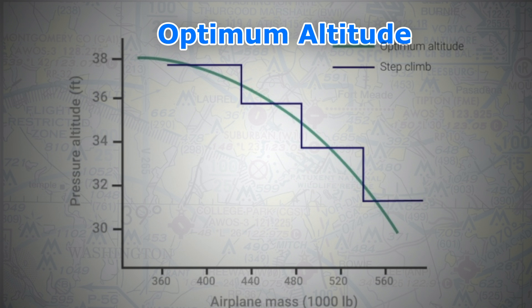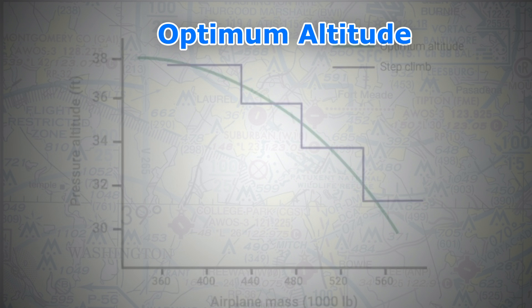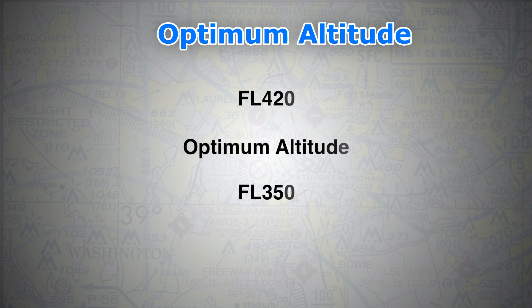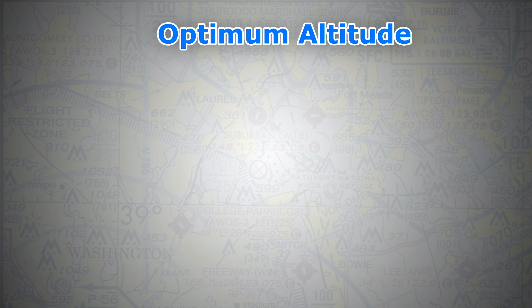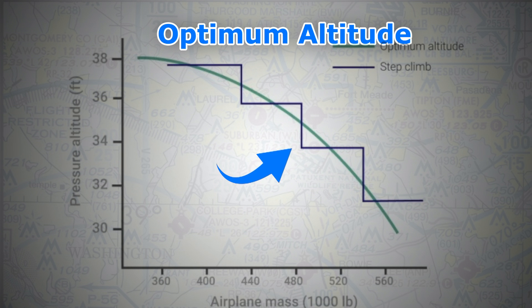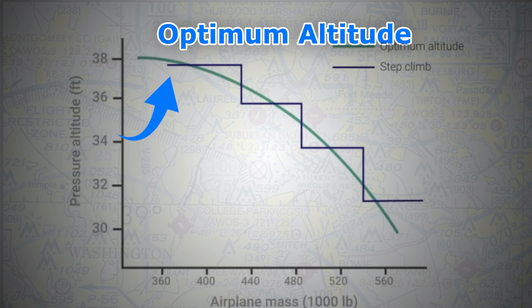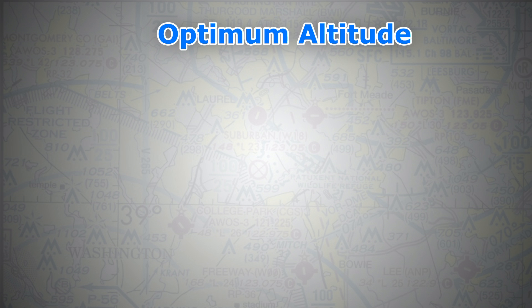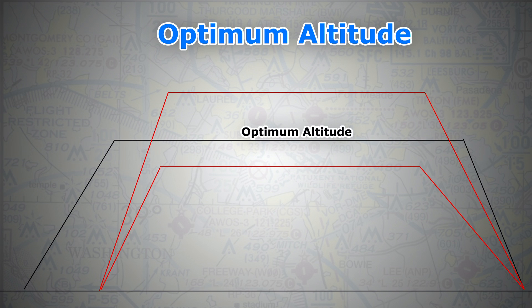Additional key points to keep in mind about the optimum altitude: it usually lies between Flight Level 350 and Flight Level 420. It is not constant throughout the flight — it moves up and down, usually upward, depending on changes in atmospheric conditions and also as the weight of the aircraft decreases as a result of fuel burn. Flying above or below this altitude decreases the range of the airplane.